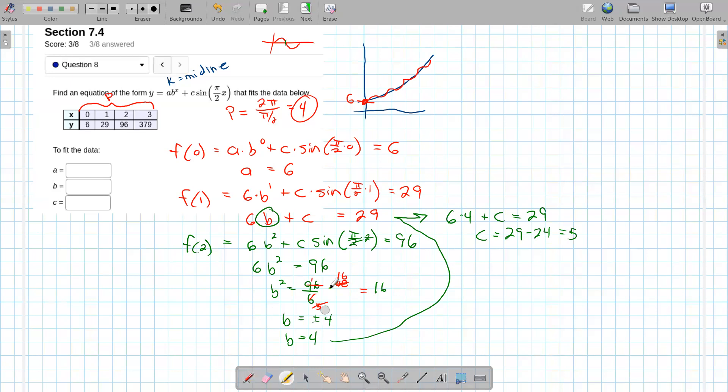So what do we got? How are we doing? We got a value for a, we got a value for b. And we just got a value for c there. So we think we have a function for this. We got to test it out, make sure it works.